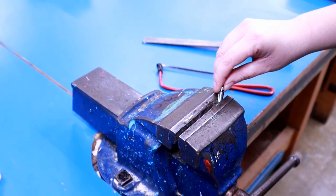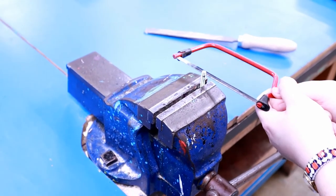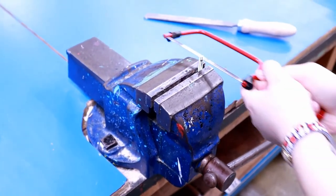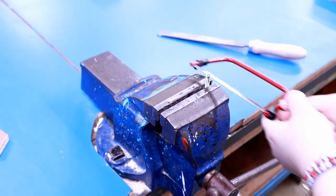Place your bolt into the metal vise. Then use your hacksaw to trim your bolt.